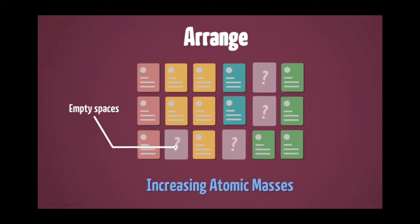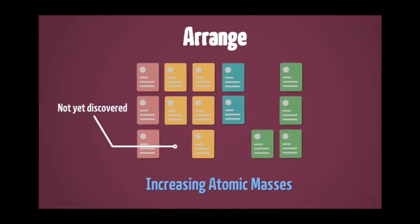One is, there were few empty spaces left in the table. Mendeleev believed that these positions belonged to the elements that were not discovered. Later on, when these elements were discovered, the properties predicted by Mendeleev was perfect.